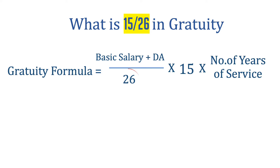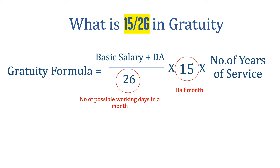26 means the number of possible working days in a month, excluding Sundays. Whereas 15 is used to calculate the half-month salary of that particular employee.